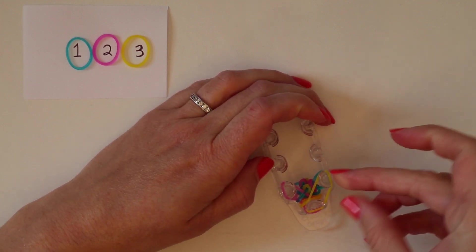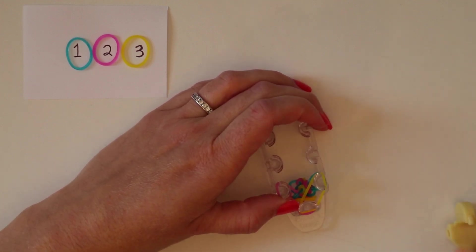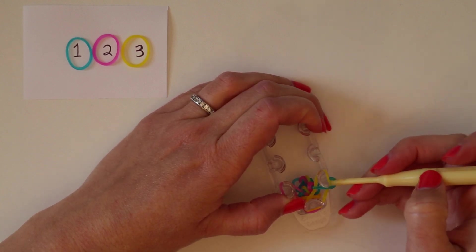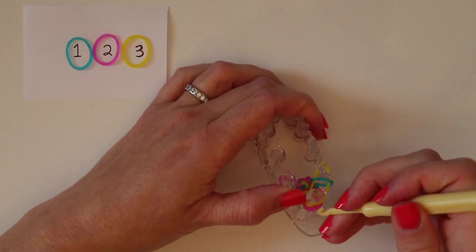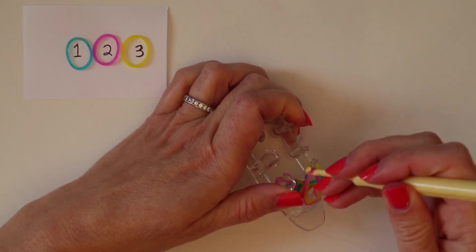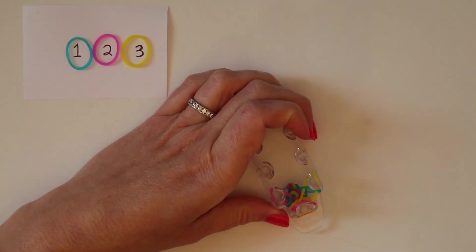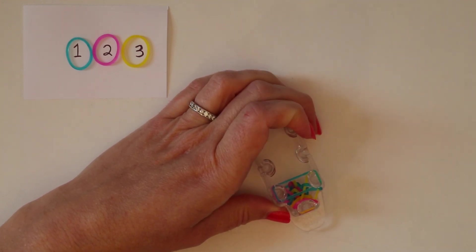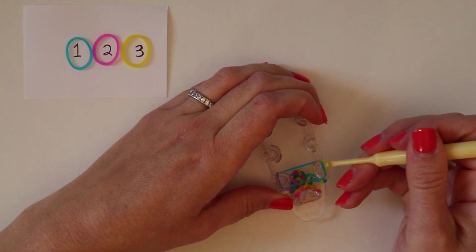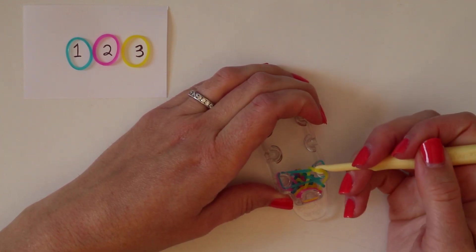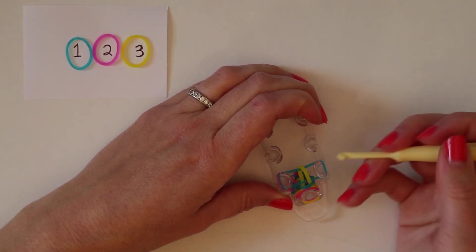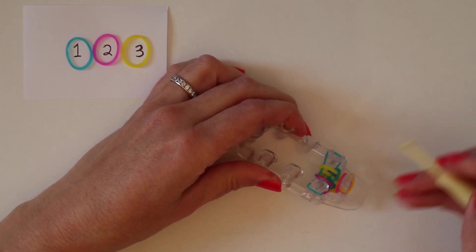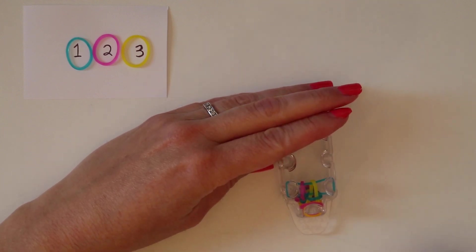Color one again across the back two pegs. And then, bring the bottom band up and over, and the bottom band up and over. Color one again across the back two pegs. And then, bringing from both sides up and over, and alternating now.